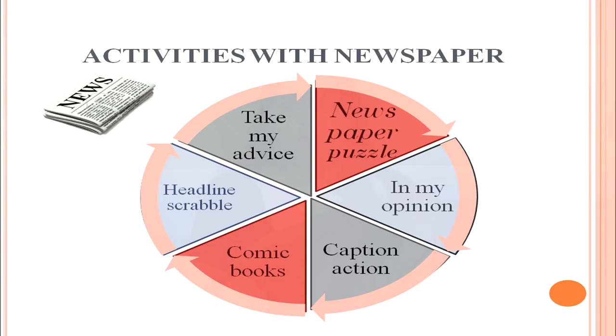The third activity is caption action — cut pictures from the newspaper, give them to students without captions, and ask students to write their own caption for each picture. The fourth activity is comic books — students cut cartoon characters from the comic section, prepare their own book, paste those characters, and write their own conversation for the characters. This is a very interesting activity for primary students.